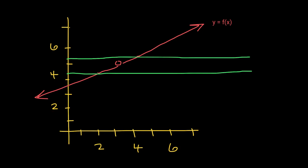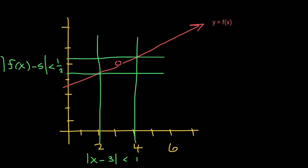I'm going to draw a vertical line through the intersection of my horizontal lines and my function — like this and like this. As long as my x values are within one unit from 3 — less than one unit from 3 — my function values will be within one half unit from 5.